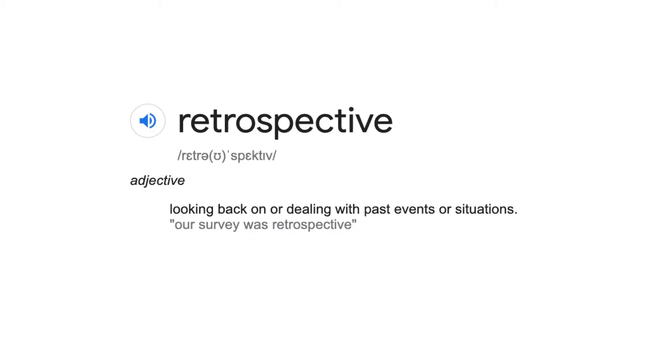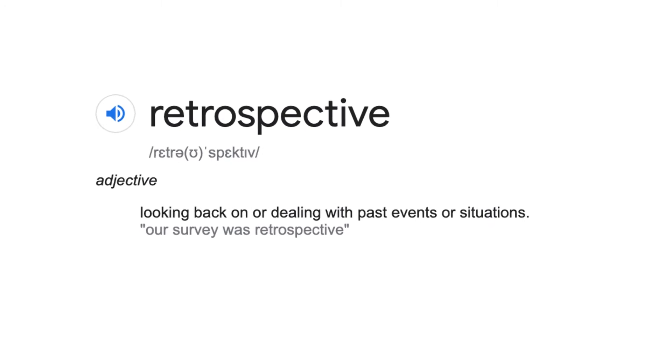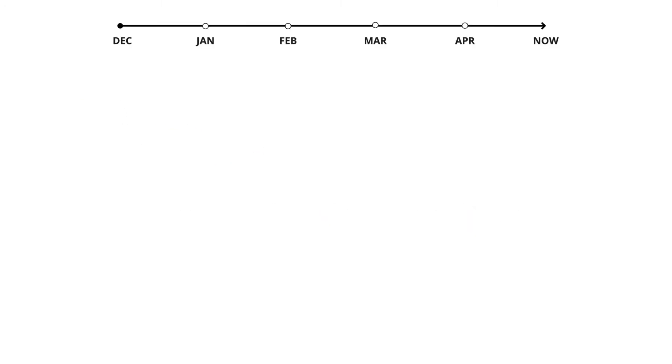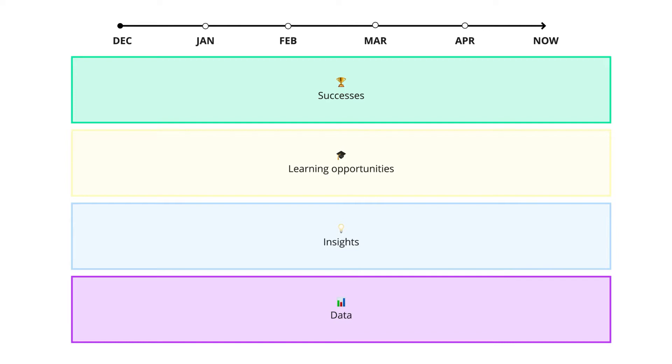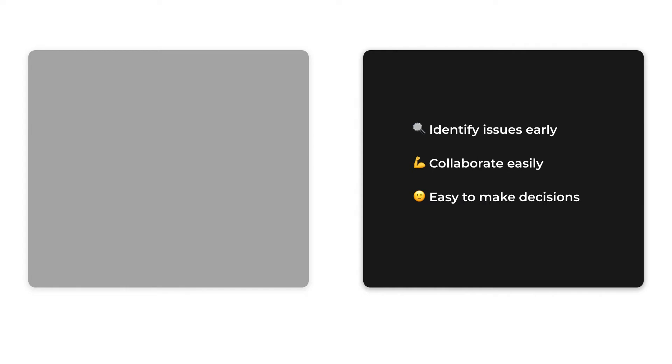A retrospective meeting gives your team superpowers, and a timeline retrospective allows you and your team to take a moment to reflect and look back at important milestones like successes, learning opportunities, data, and feedback from your customers. Taking the time for an online retrospective meeting will give you a lot of benefits, helping your team move from reactive mode to proactive mode so you can put yourself in the driver's seat instead of running around putting out fires all day.